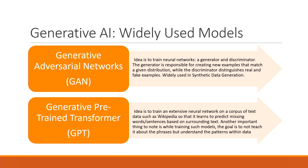The generator generates new data, as the name suggests, and the discriminator helps in discriminating what is fake versus real data. If you haven't heard about synthetic data, that is one of the most powerful applications of GANs.